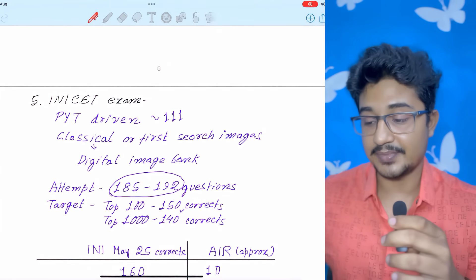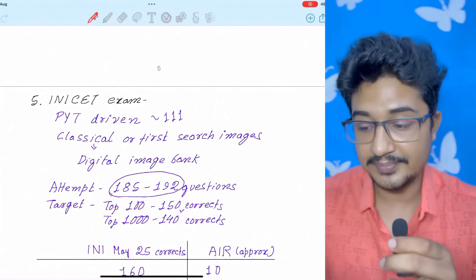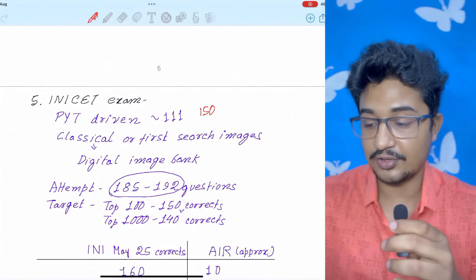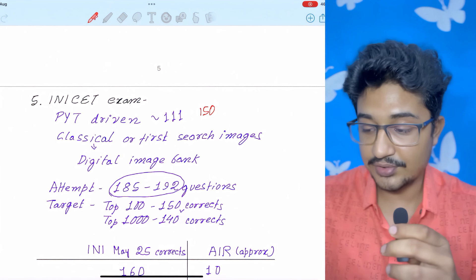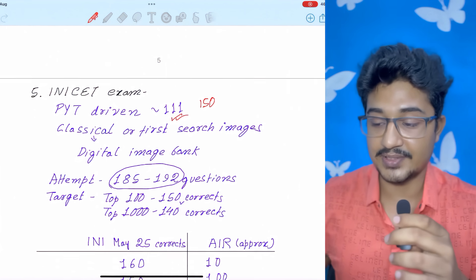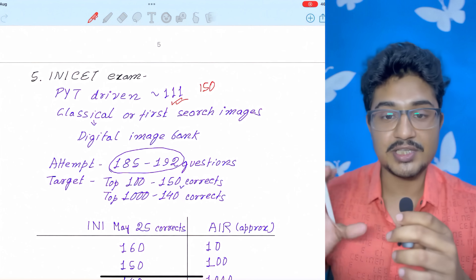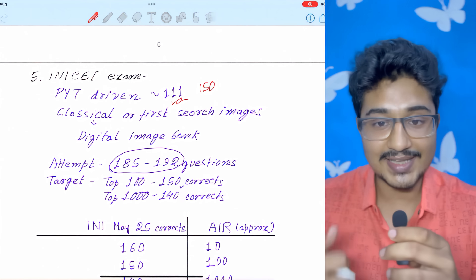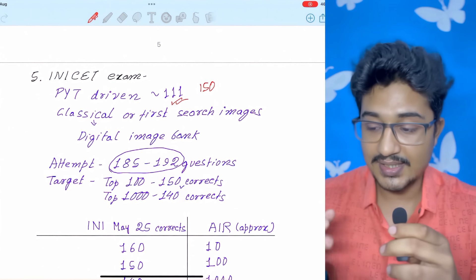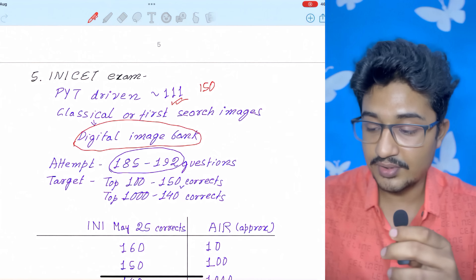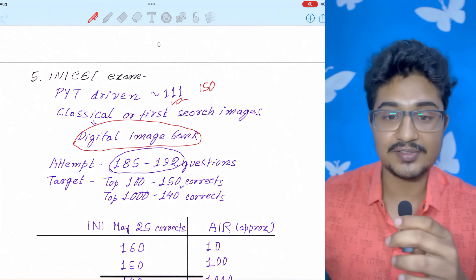Coming to the INICT exam. It is a PYT driven exam. In May INI 2024, there were 150 questions from the previous year topics. In May INI 2025, there were 111 questions from the previous year topics. In the images, the image-based questions, the first search image you get in the browser or the classical image you get is the given question. So, you can make a digital image bank of your own with the classical and the first search images.